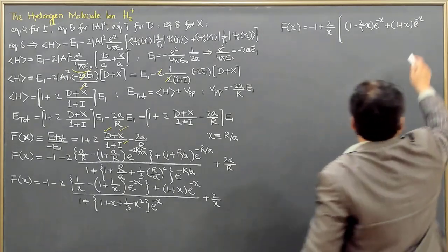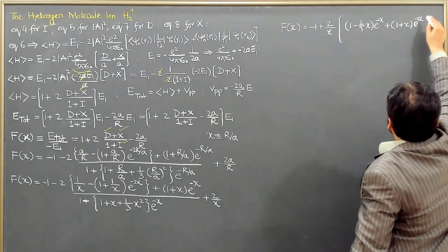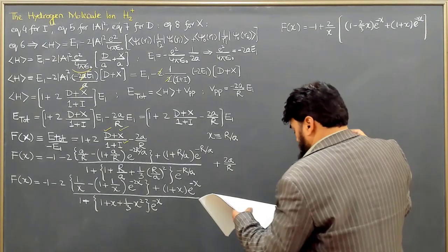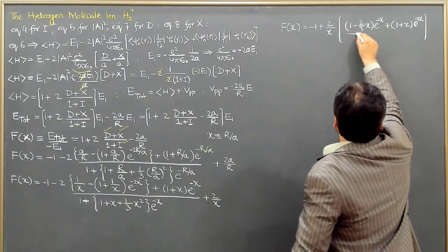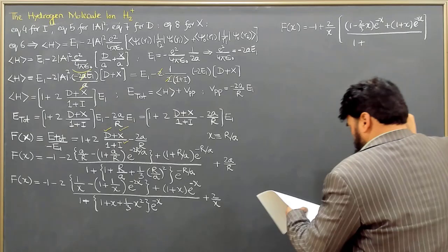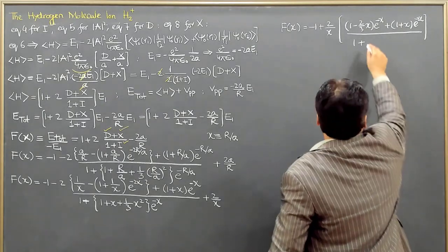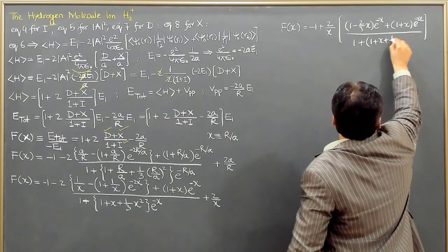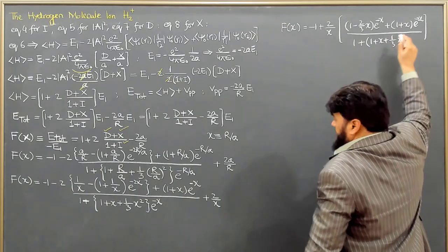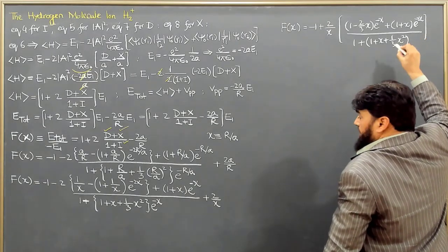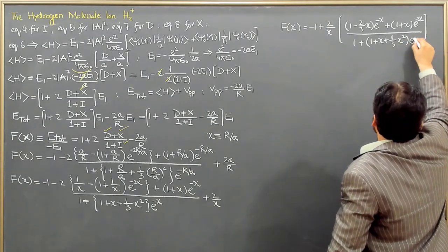Here is 2 minus 2 minus 2x, and this is divided by 1 plus 1 plus x plus 1 over 3 x squared times e to the power minus 1 minus 2x.